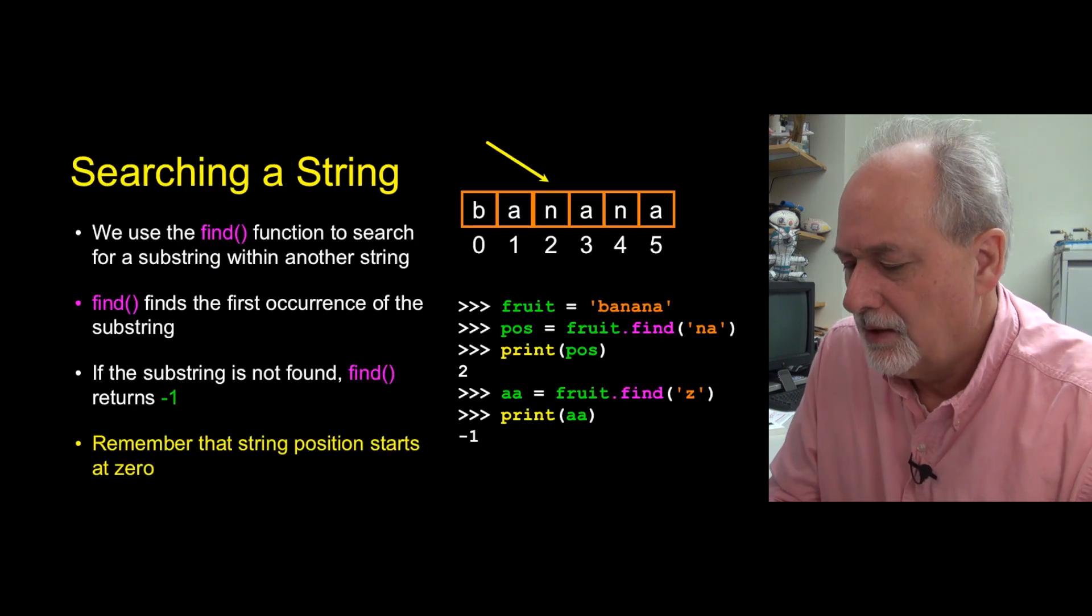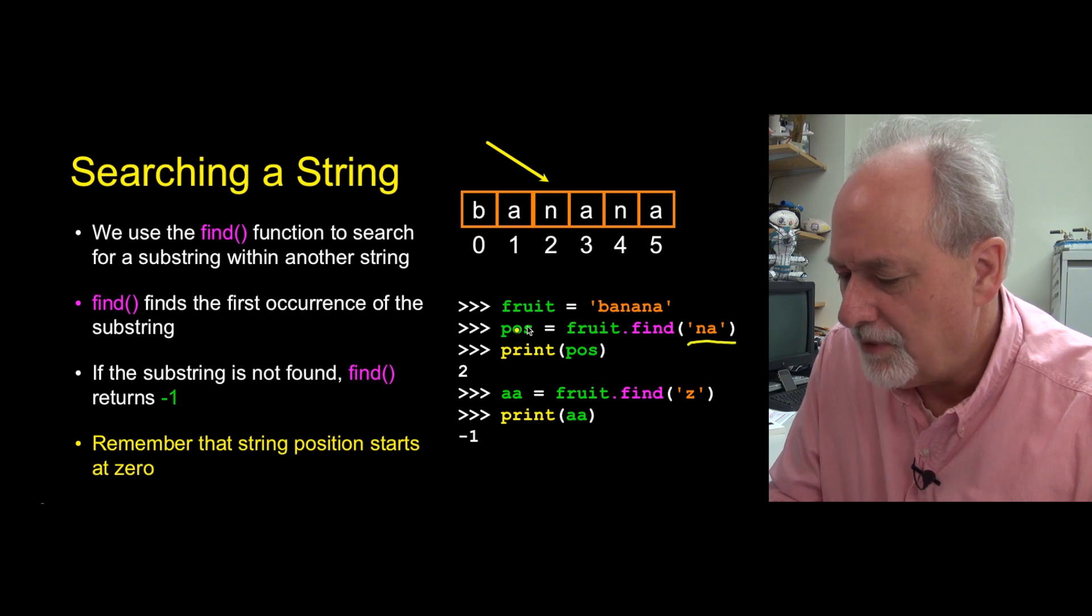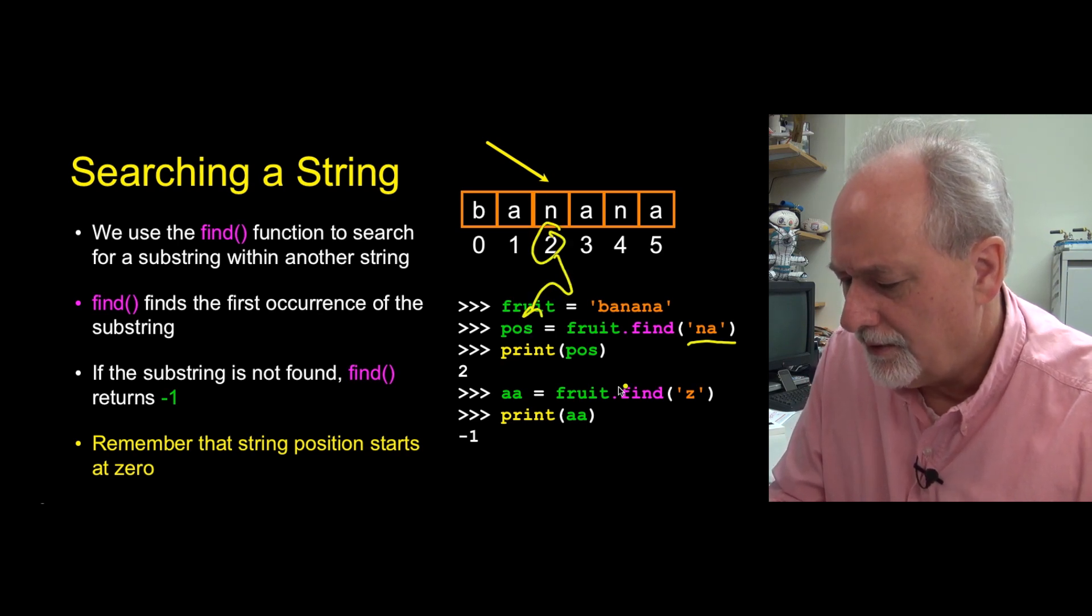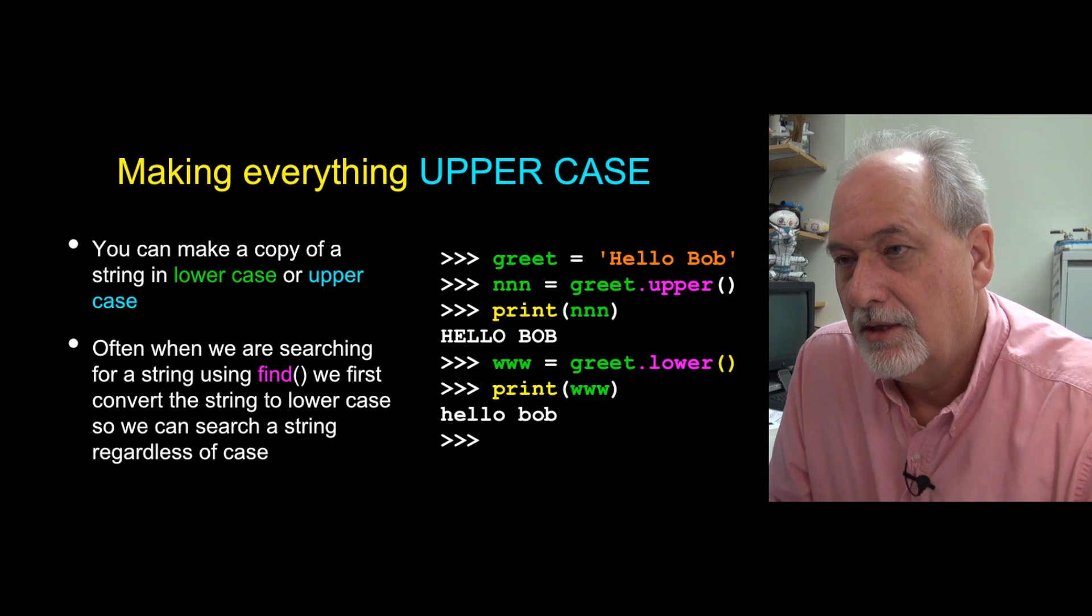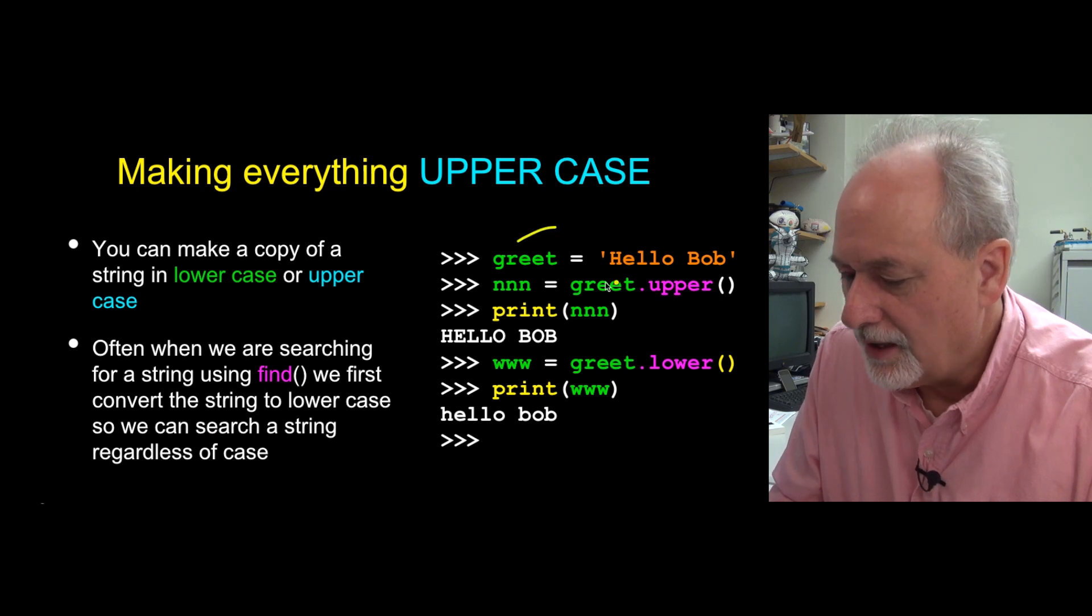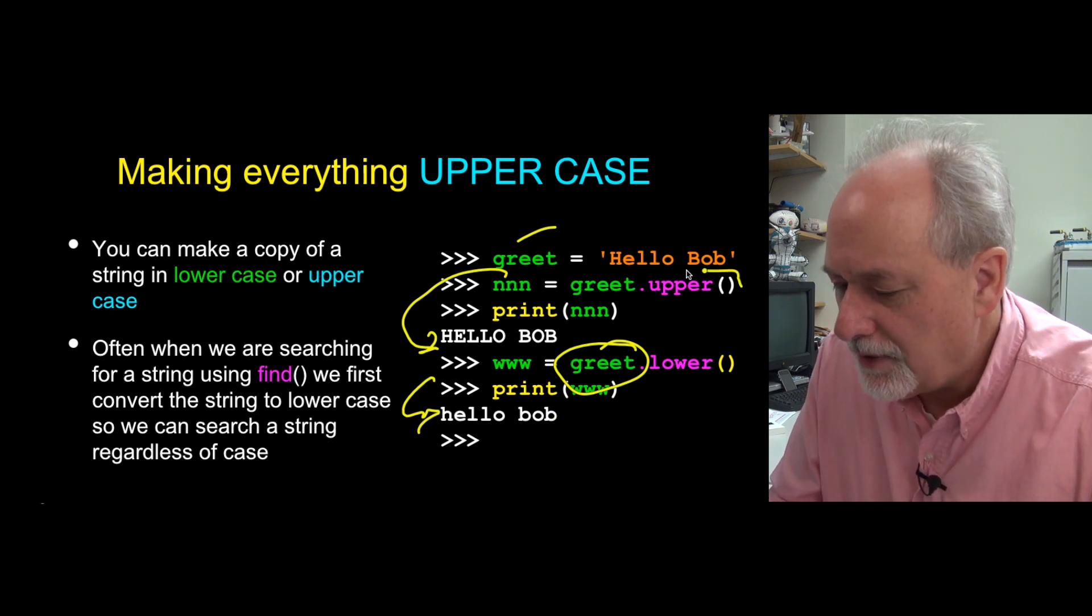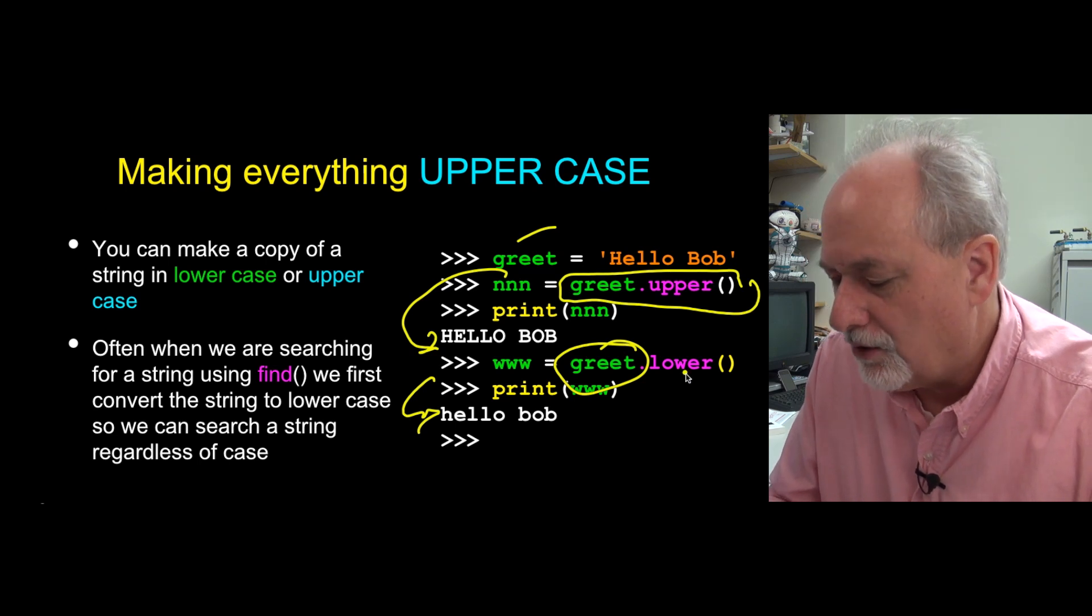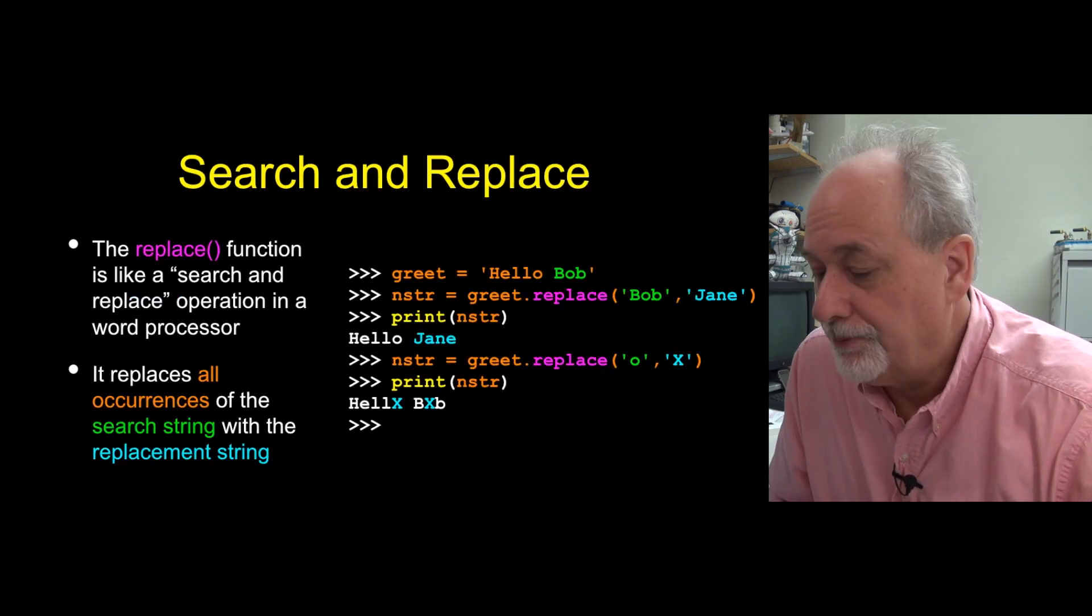The find operation says find me a substring within a string. Find me the first 'na' and give me back the position. That gives me back two. Then I can say go find a z in there. Well there's no z so it returns me negative one. So that's what the find does. We're going to use this kind of stuff a lot. We do a lot of looking in strings. Converting things to upper or lower case - there is an upper method and a lower method.